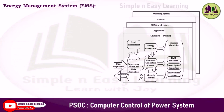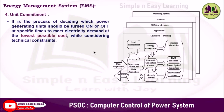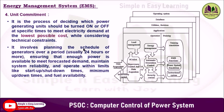The fourth function is unit commitment. It is the process of deciding which power generating units should be turned on or off at specific times to meet electricity demand at the lowest possible cost. Methods such as brute force enumeration and the priority list method can be applied considering technical constraints. It involves planning the schedule of generators over a period — usually 24 hours or more — ensuring enough power is available to meet forecasted demand, maintain system reliability, and operate within limits like startup and shutdown times, minimum up and down times, and fuel availability.